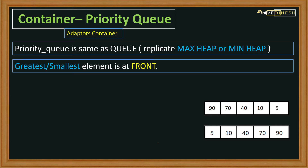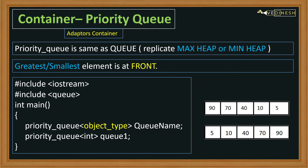Now let's quickly see the implementation of priority queue. To create a priority queue, first we need to include the header file that is queue. Please note that this header file is the same for both queue and priority queue. For declaring a priority queue we use the priority queue class, which is defined in this header file. In the parameters we pass the object type — the kind of data we want to store. Here we are putting int, followed by the name of the priority queue.